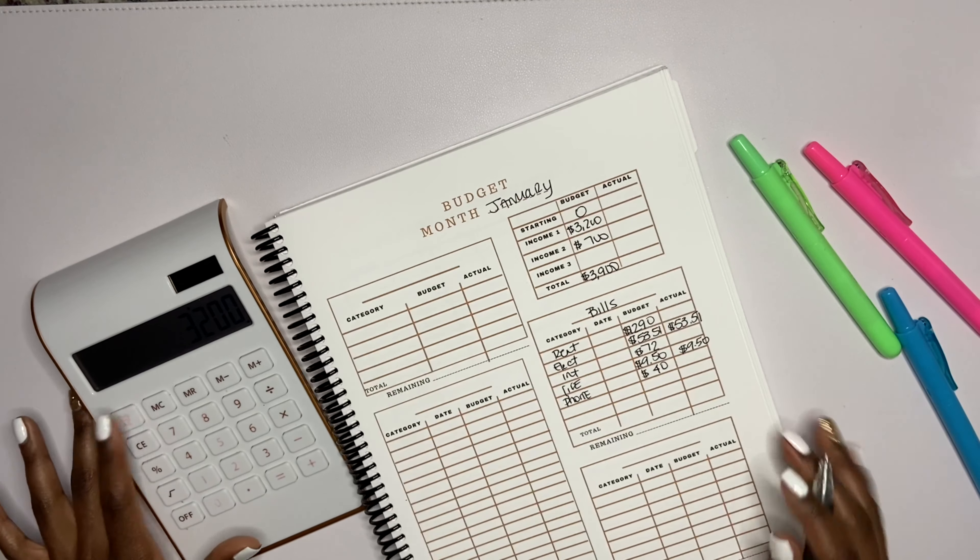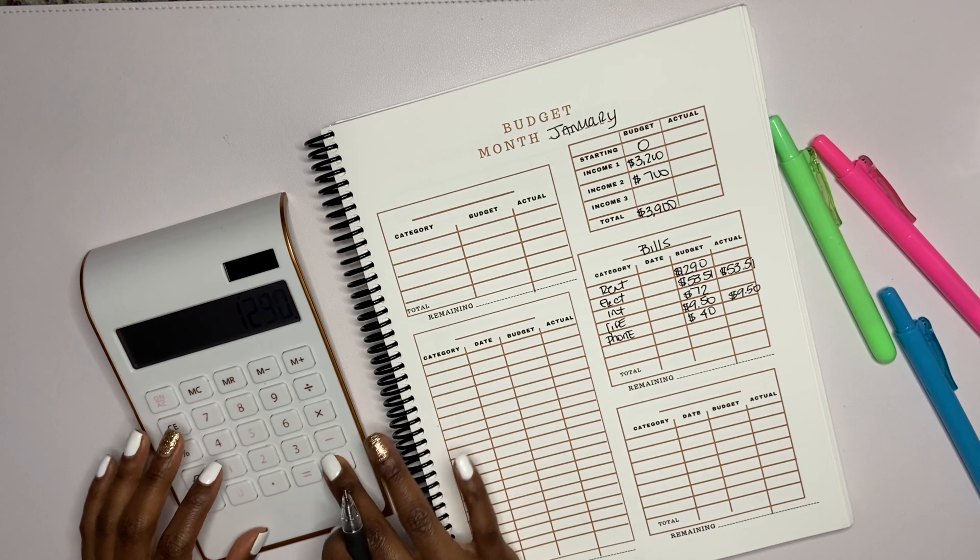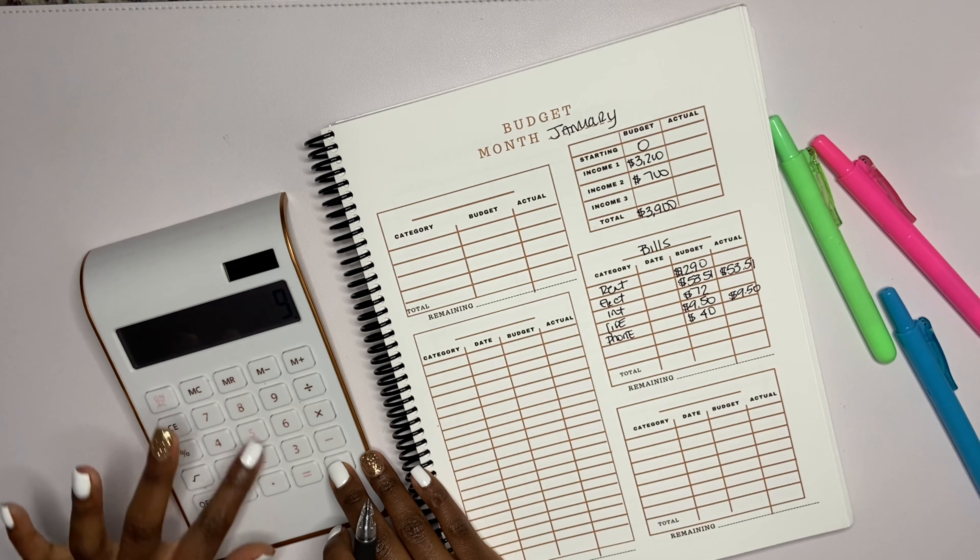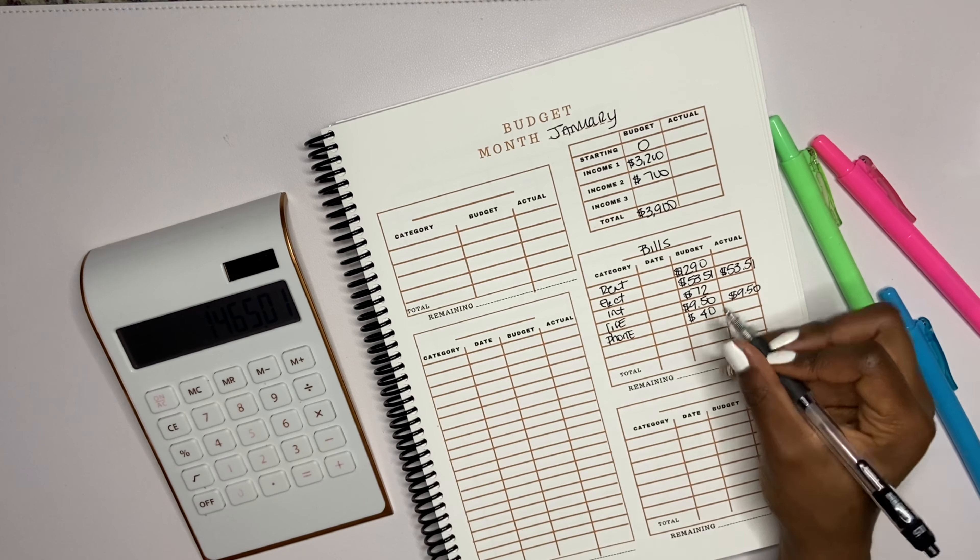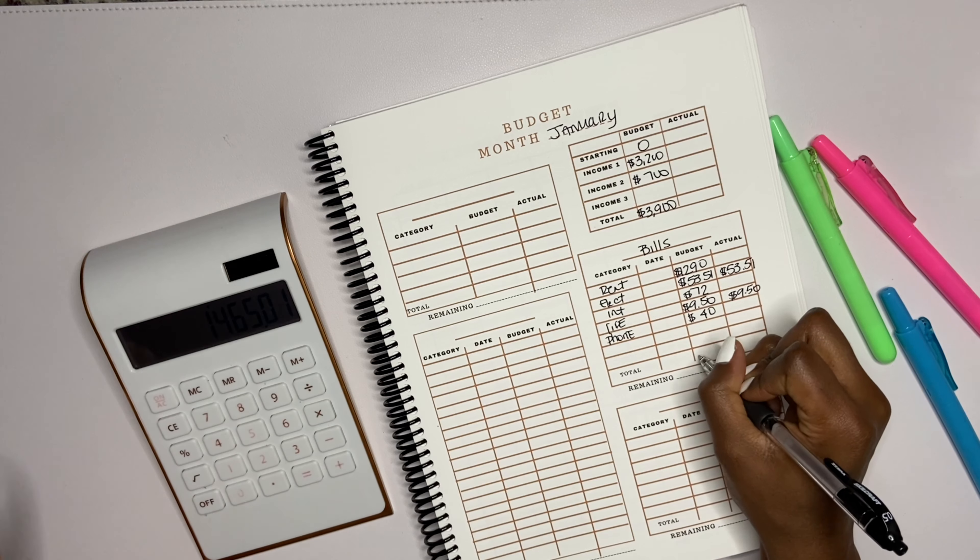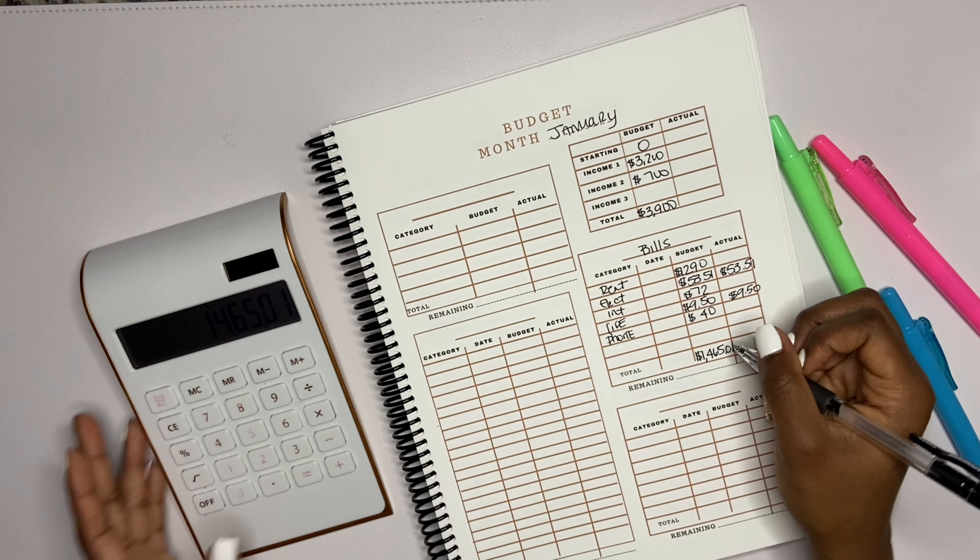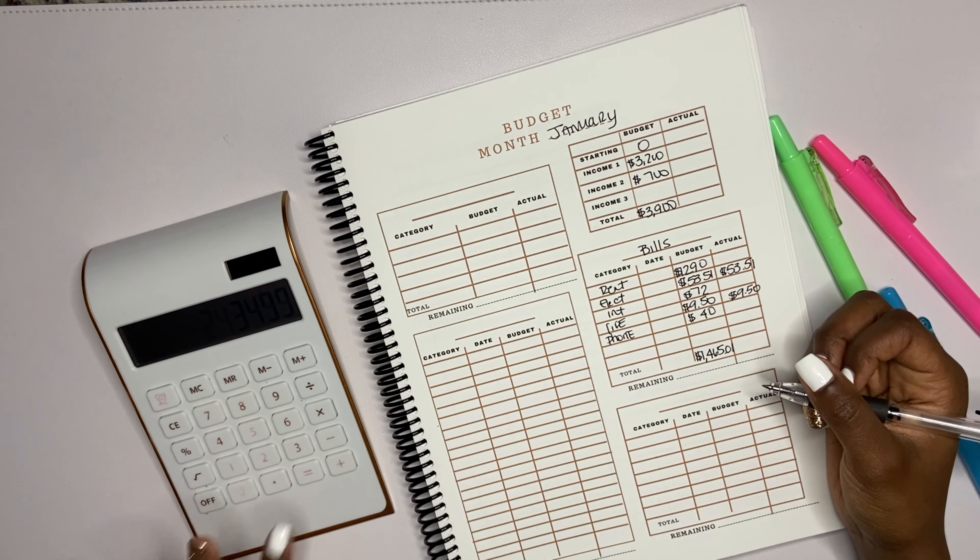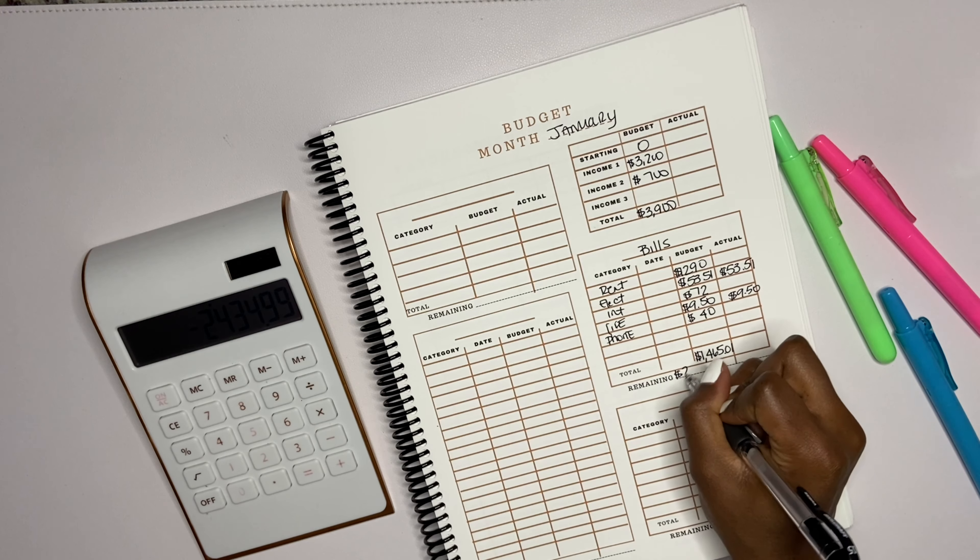We have the internet which is $71. I'm going to say $72 because I don't know it by heart. We have life insurance which is $9.50, actual $9.50. Then my phone bill, which I just pay my mom for, that's $40.